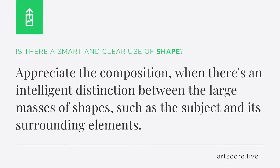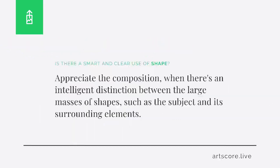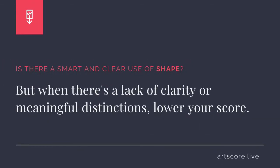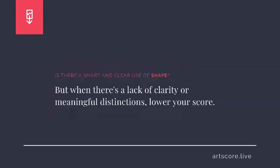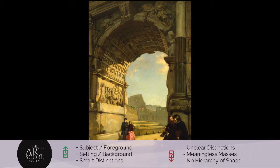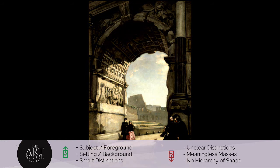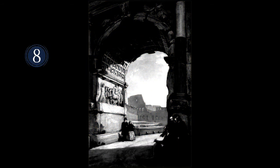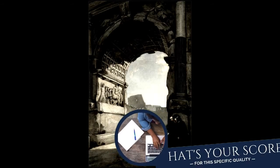Shape. Is there a smart and clear use of shape? Appreciate the composition when there's an intelligent distinction between the large masses of shapes, such as the subject and its surrounding elements. And when there's a lack of clarity or meaningful distinctions, lower your score. I scored the arrangement an 8. I see how there are smart distinctions between the foreground and background elements. What's your score?